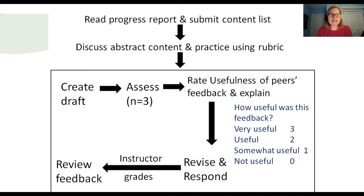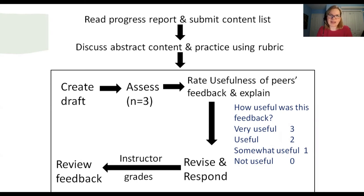When students see the feedback they've received from their three peers, they rate the usefulness of their peers' feedback using a simple scale: very useful, useful, somewhat useful, not useful. Importantly, they need to write in the text box to explain why they chose that usefulness rating. They then respond to the feedback they received — I'll show you exactly what that looks like on the next slide.